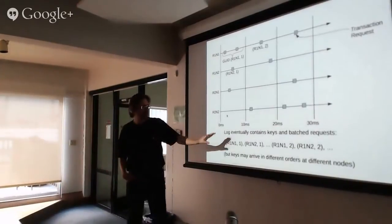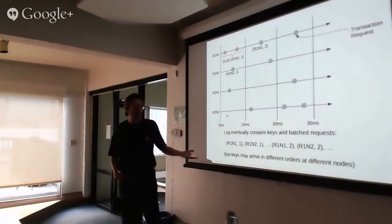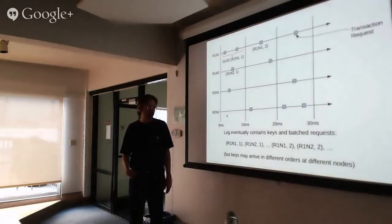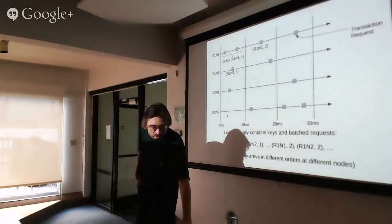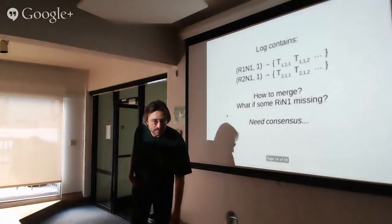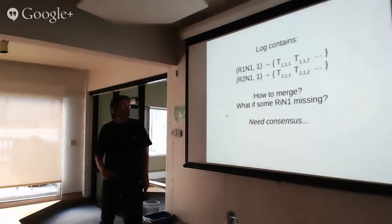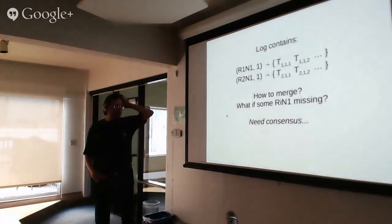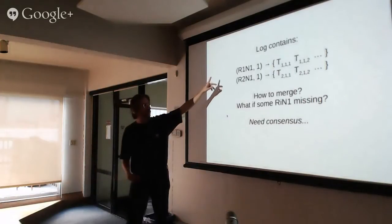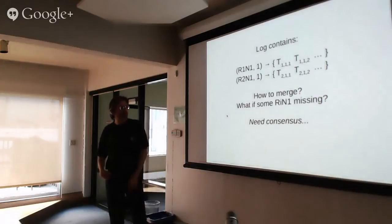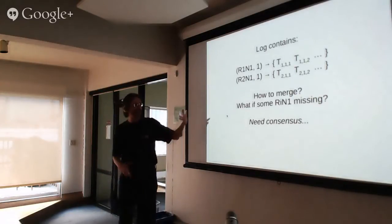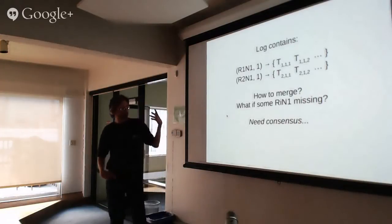All of the batch IDs eventually show up, but it's an eventually consistent system — they might arrive in different orders at different nodes. We can't really control that. So at some point we might see that two IDs have shown up, each with a sequence of transactions. How do you merge those two sequences? How do you decide: do you do the R1 ones first and then the R2 transactions, or the other way around?